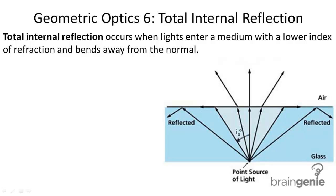Total internal reflection occurs when light enters a medium with a lower index of refraction and bends away from the normal.